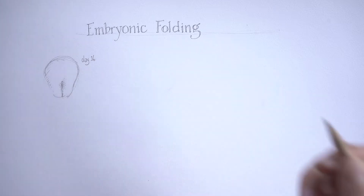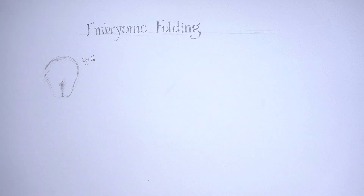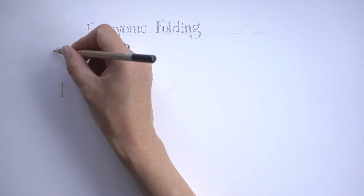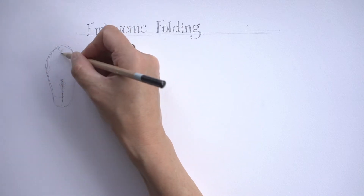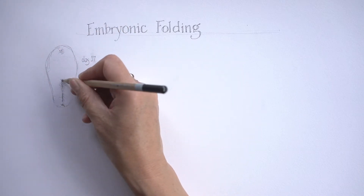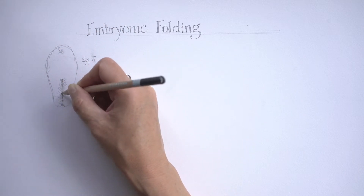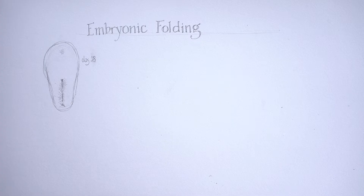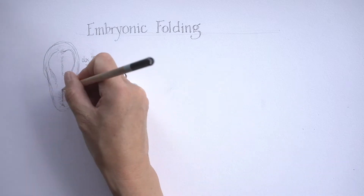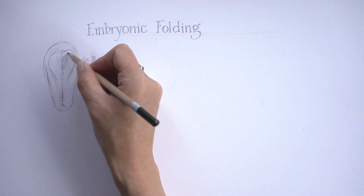Over subsequent days this germ disc is going to lengthen and we'll start to see a bit more shape appearing. But at the moment this is still a flat disc, and what we're going to have to do over this third and fourth week of development is convert that flat disc into something that's shaped a lot more like a body.